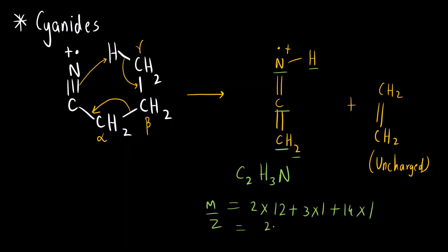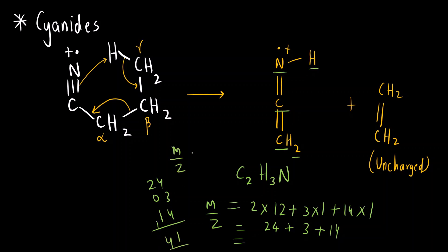So 24 + 3 + 14 = 41. At m/z = 41, we will get the peak for the charged fragment formed due to McLafferty rearrangement of the cyanide compound.